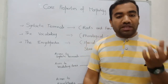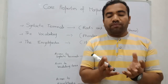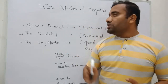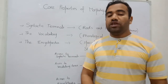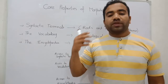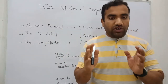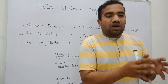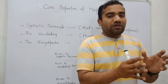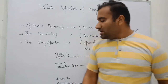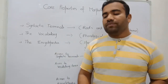The third core property is encyclopedic information. This tells us what the meaning of that particular word is that we have generated. These are the core properties of morphology. The three things are: first, syntactic terminals; second, phonological contents — that is, vocabulary; and every word must have some phonological content, and that word must give us some meaning, which is called encyclopedic information.